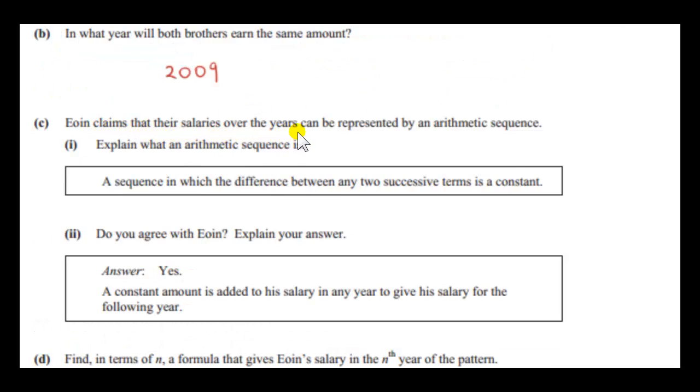Owen claims that their salaries over the years can be represented by an arithmetic sequence. Now what is an arithmetic sequence? We've seen that in previous videos. It's a sequence in which the difference between any two successive terms is a constant. So I suppose the simplest arithmetic sequence is a set of natural numbers: one, two, three, four, etc. The difference between any two successive terms is constant.